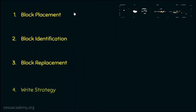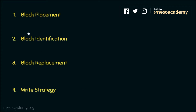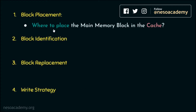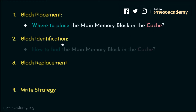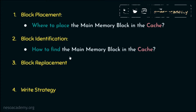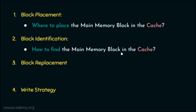The cache is designed keeping four things in mind. First is block placement, which is where to place the main memory block inside the cache. Next is block identification, which helps us find out whether the main memory block is present inside the cache or not.